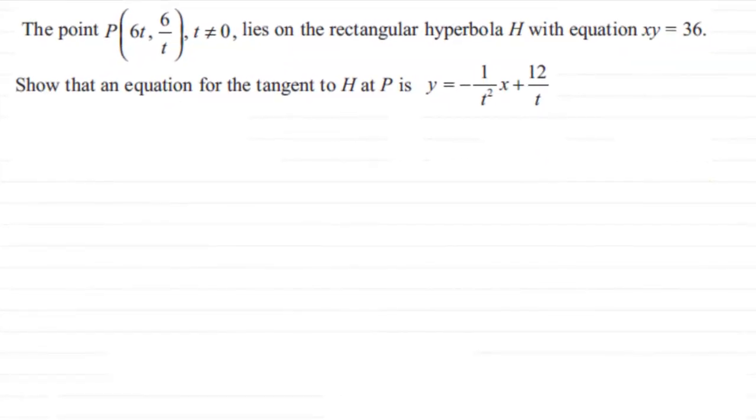This is a typical question that you can get on finding the equation of a tangent to a rectangular hyperbola. In this example we have the point P with parametric coordinates 6t and 6 divided by t, where t is not equal to zero.